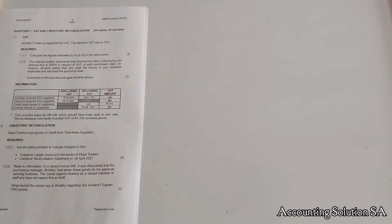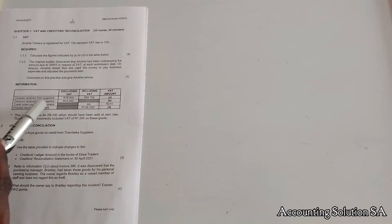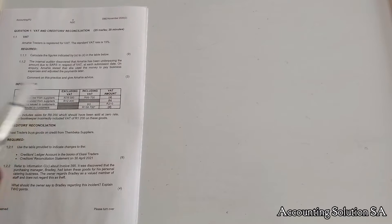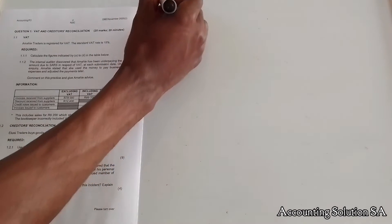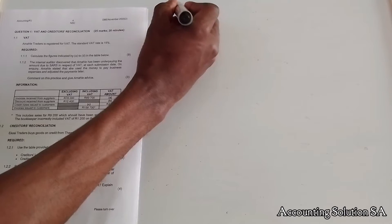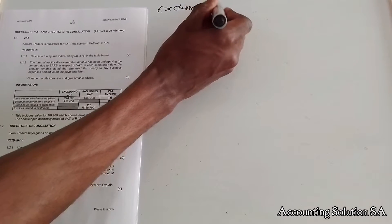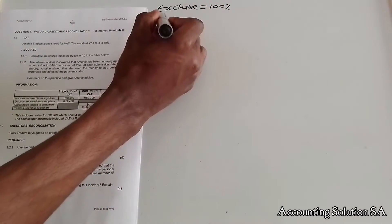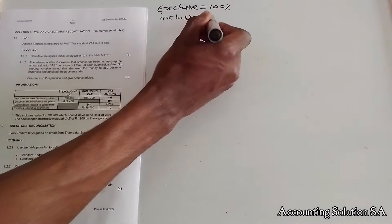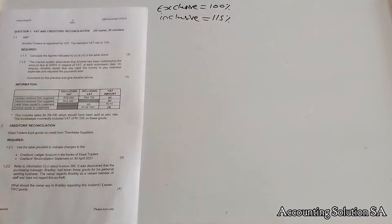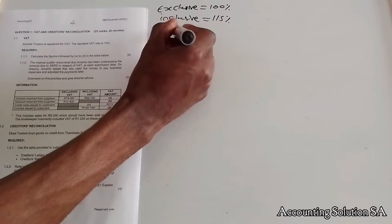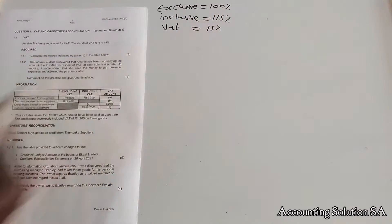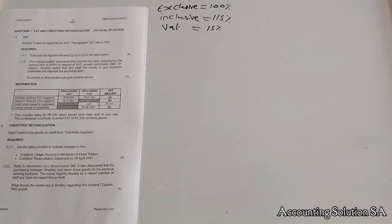Calculate the figures indicated by A to D in the table below. The information given includes: invoice received from supplier, discount received from supplier, credit note issued to customer, and invoice issued to customers. They give us the exclusive VAT amount. You need to know that exclusive means 100 percent — it doesn't include VAT — but inclusive means 115 percent because it has VAT included, and VAT itself is 15 percent.